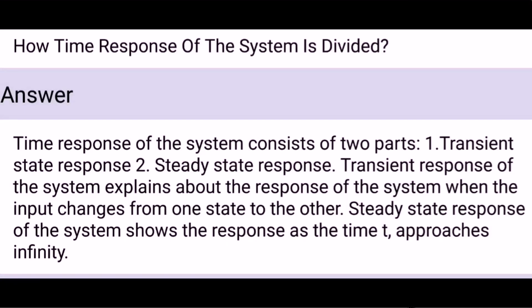How is the time response of the system divided? The time response of the system consists of two parts. First, transient state response. Second, steady state response. Transient response of the system explains about the response of the system when the input changes from one state to the other. Steady state response of the system shows the response as the time t approaches infinity.